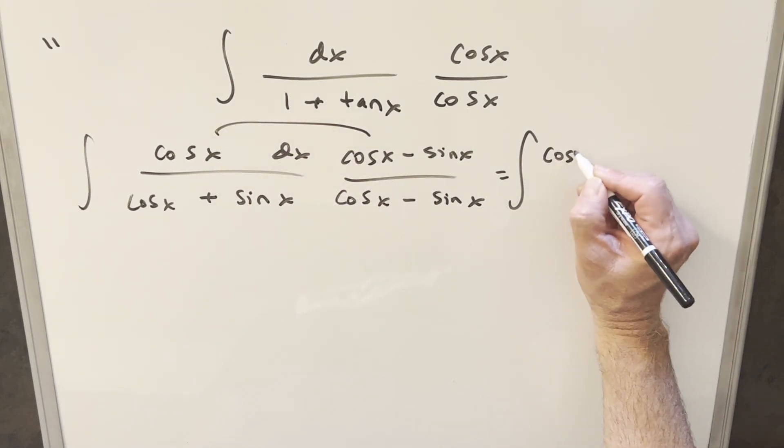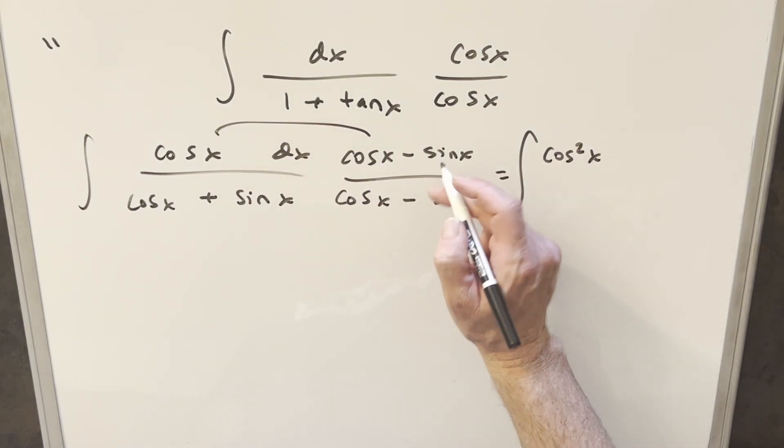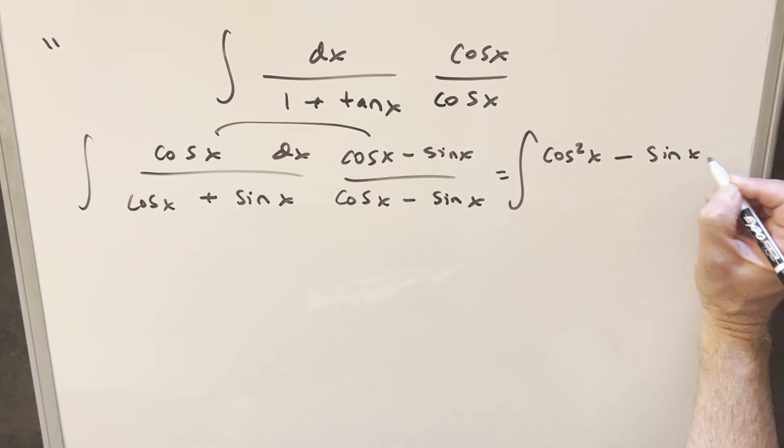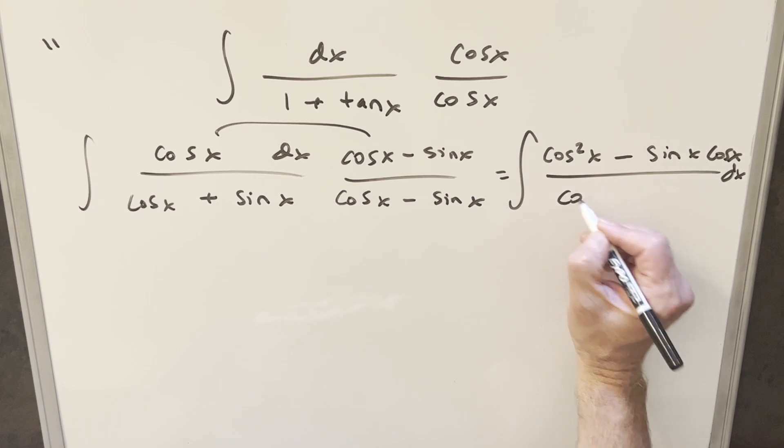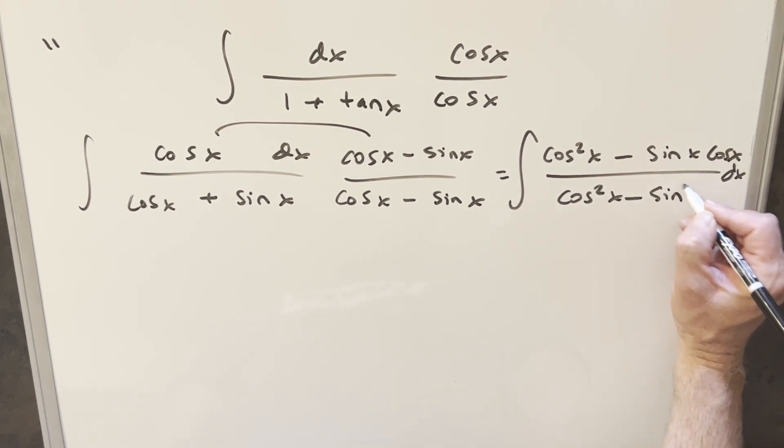So for the first term here, this is going to become cosine squared x. The second term we're going to get minus sine x cos x. I didn't leave any room for a dx, so let me just squeeze it in there. And then here, because of the difference of squares, we're going to end up with cosine squared x minus sine squared x.